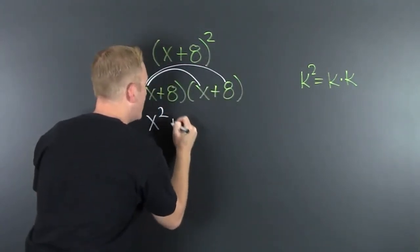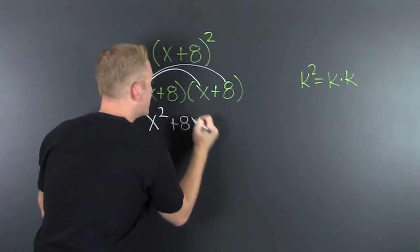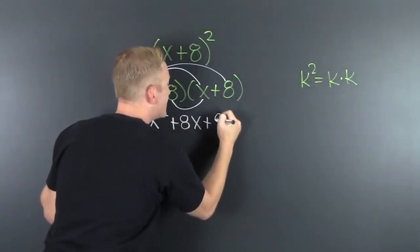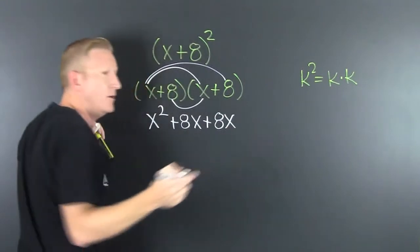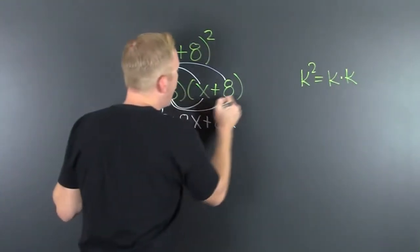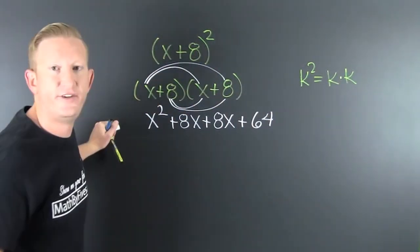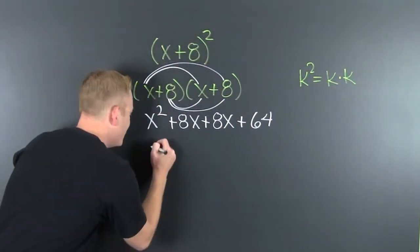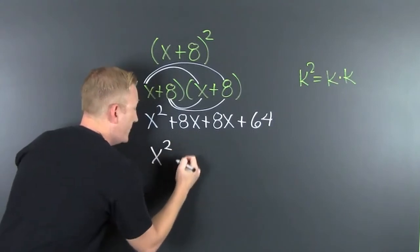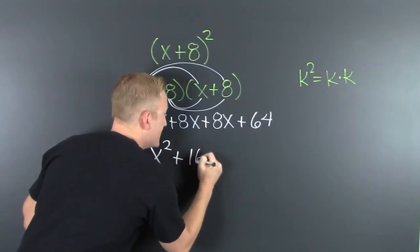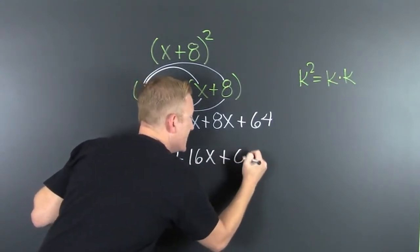Outer. That's a plus 8x. Inner. Plus 8x. What's next? We last. Plus 64. Sure. Finish him. Yeah! Finish him! X squared plus 16x plus 64.